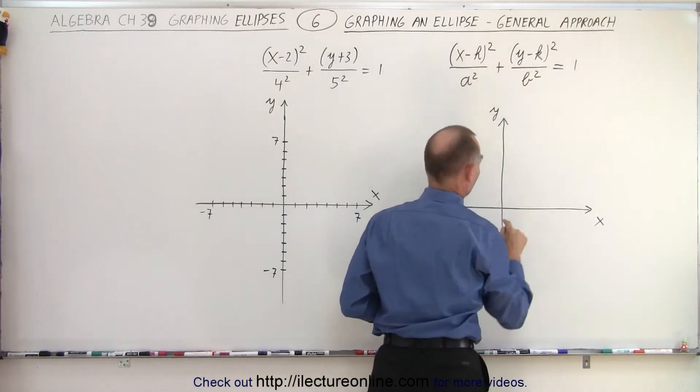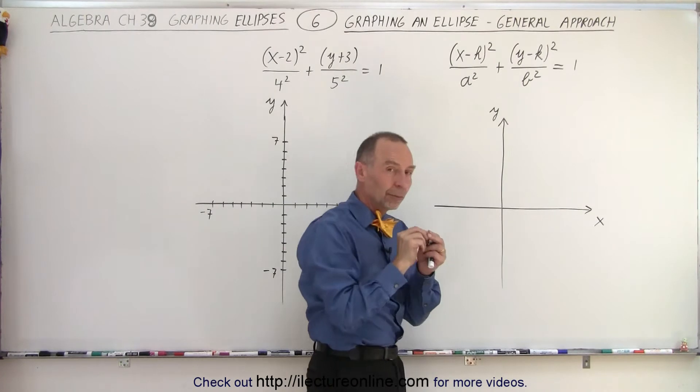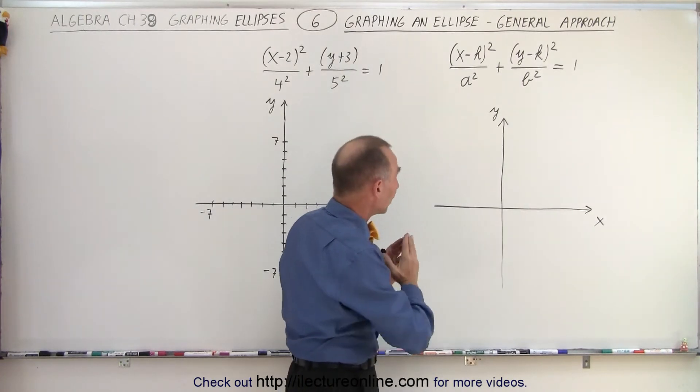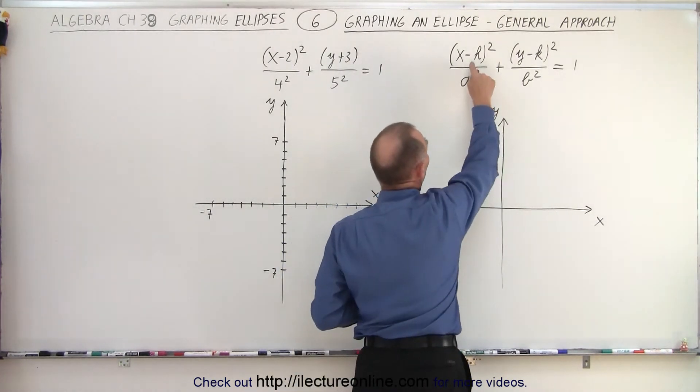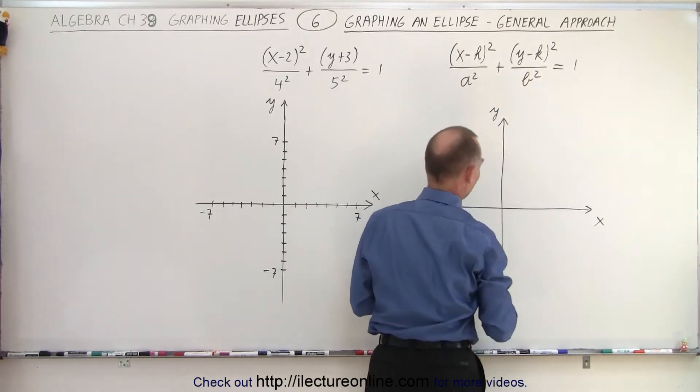Of course, if h and k are equal to 0, then the central point of the ellipse is right at the origin. The distance in this case is going to be offset, a distance h to the right, and a distance k up.